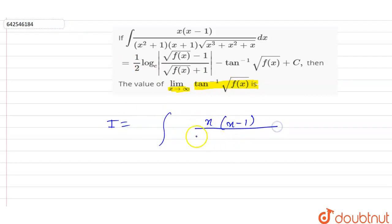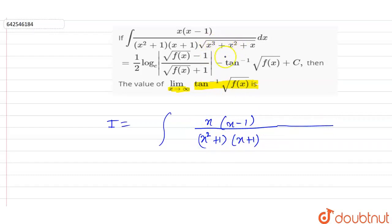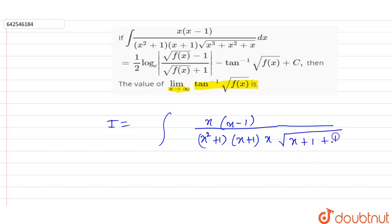In the denominator we have x squared plus 1 into x plus 1. We have taken x squared common from this root. Then we have root of x squared is x here. And inside the root we have x plus 1 plus 1 by x in the denominator, with respect to dx.